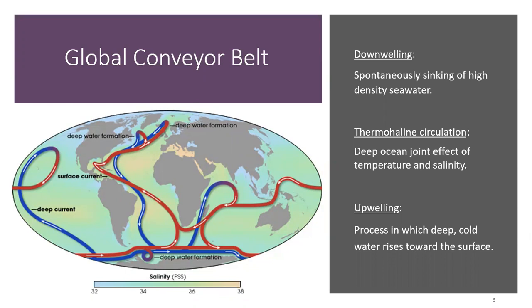Upwelling brings these waters back up to the surface through three mechanisms: one, fast-moving boundary currents like the Gulf Stream; two, vertical mixing; and three, decreases in density due to heat.